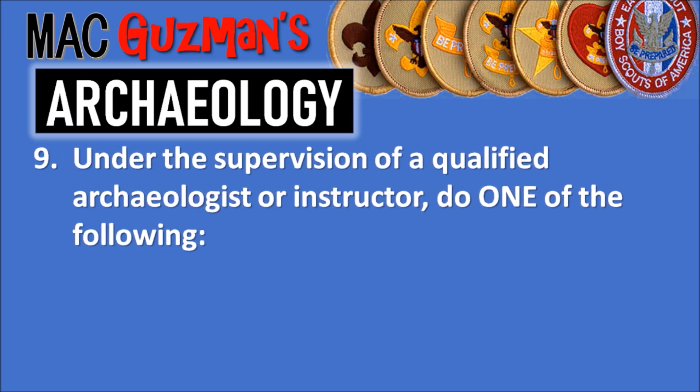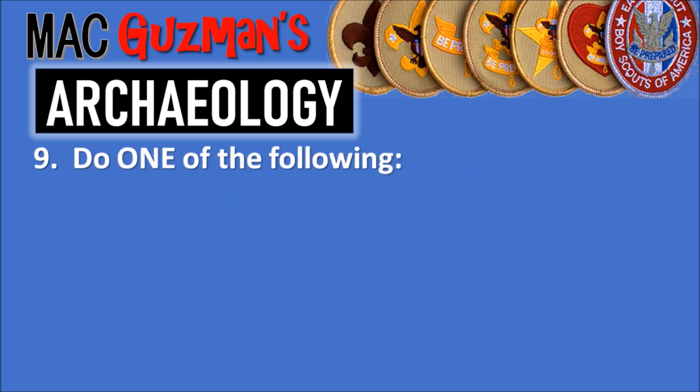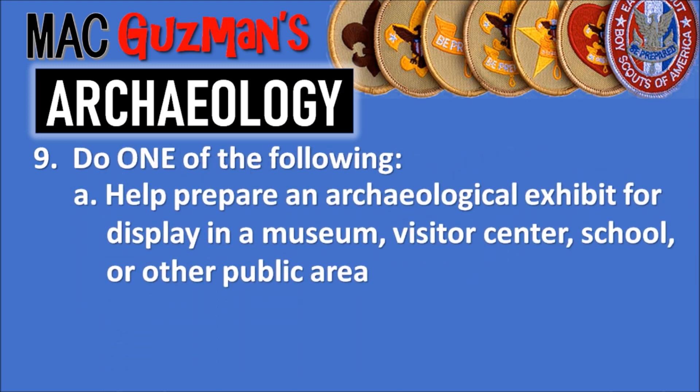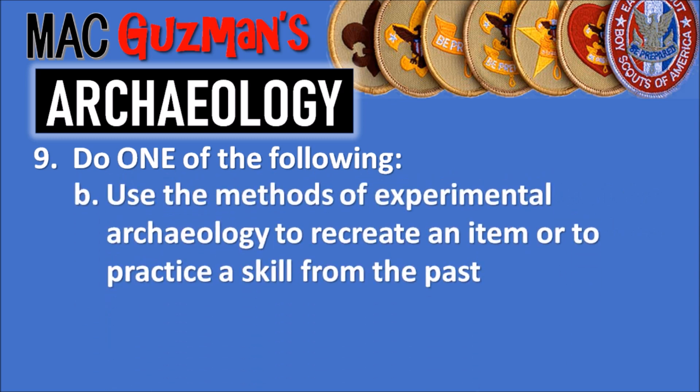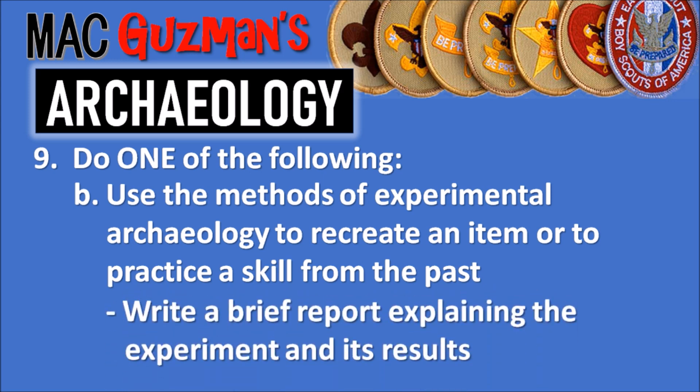Requirement nine says, under the supervision of a qualified archaeologist or instructor, to do one of the following. 9a says to help prepare an archaeological exhibit for display in a museum, visitor center, school, or other public area. 9b says to use the methods of experimental archaeology to recreate an item or practice a skill from the past, and write a brief report explaining the experiment and its results.